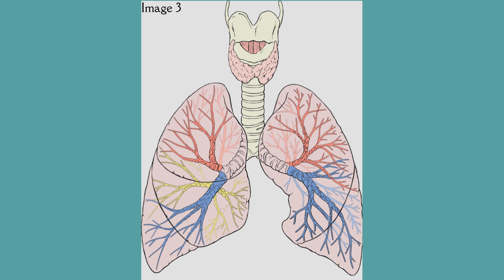The lungs, as the main and functional part of the respiratory system, include two left and right lungs. The right lung consists of three main lobes while the left lung consists of two lobes. Instead of the middle lobe, the left lung contains an empty space filled by the heart. The right lung, due to the wider and more vertical right main bronchus, is more exposed to foreign body aspiration.